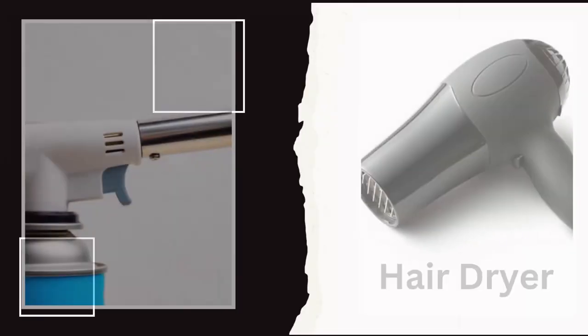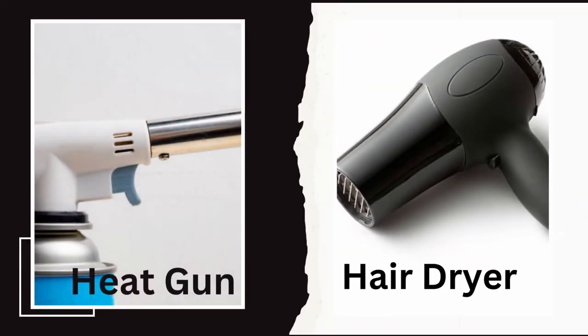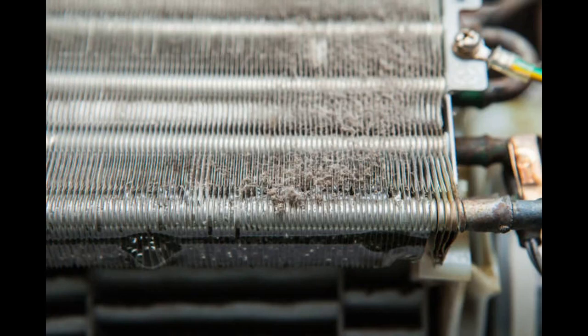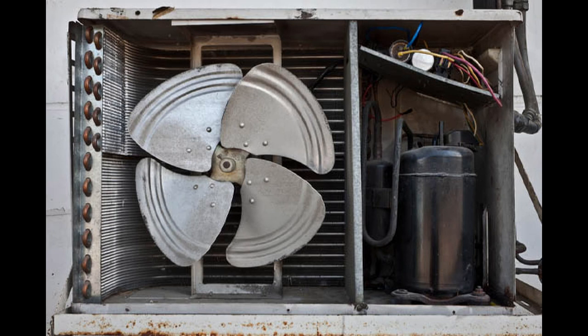Another option is to use a hair dryer or heat gun to thaw out the accumulator. Be careful not to overheat the coils, as this could damage them. Finally, you could use a chemical defrost solution designed for AC systems. These solutions are safe for use on AC coils and will help to thaw out the accumulator quickly and efficiently.